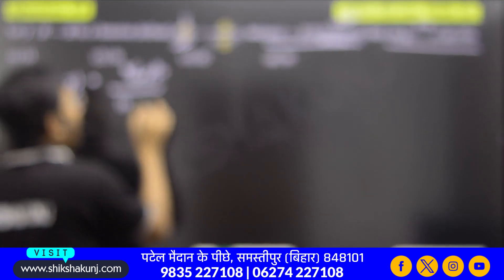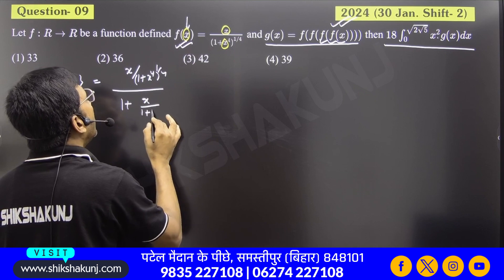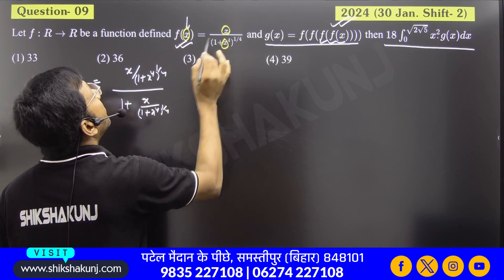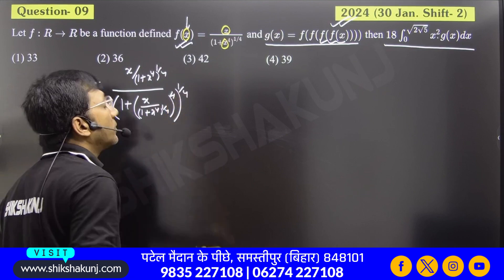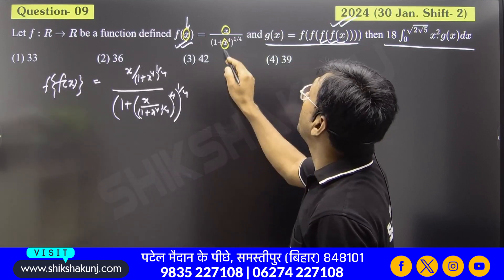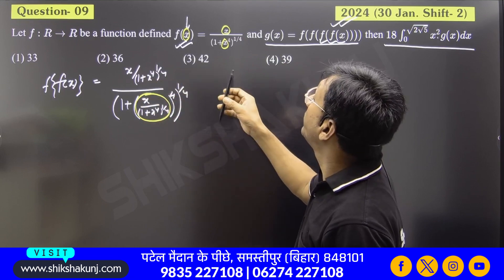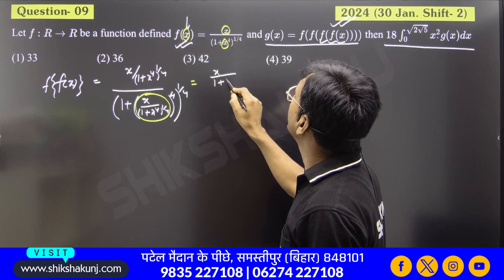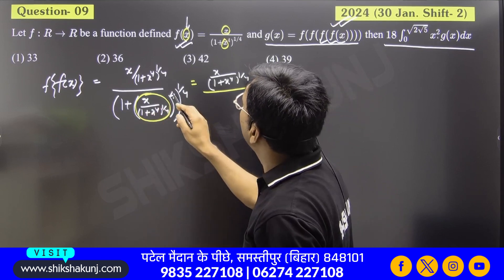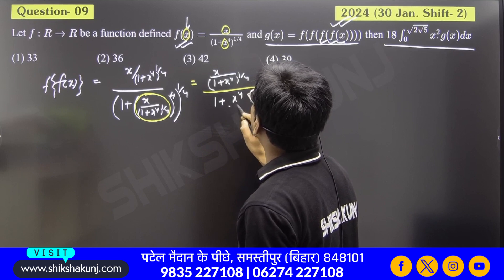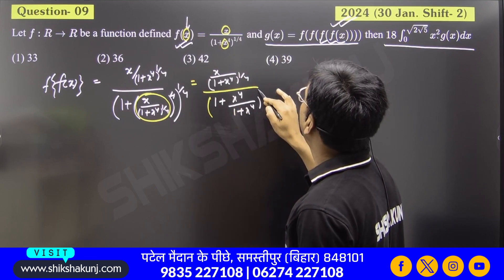1 plus x to the power 4, to the power 1/4. You will understand that in place of x we have substituted this value. Now look at the power — it is 4, and its whole power is 1/4. So solve: multiply 1/4 and 4, they cancel, giving 1 plus x to the power 4.